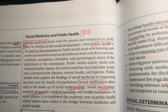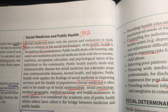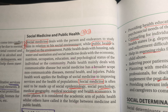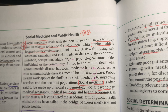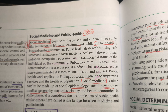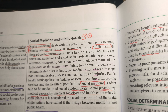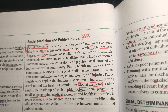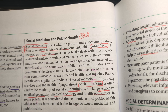Public health work applies the findings of social medicine to improving the services and health of populations. Social medicine is often said to be made up of social epidemiology, social psychology, medical geography, medical sociology and health economics. In some places, it is considered the academic arm of public health, while others have called it the bridge between medicine and public health.